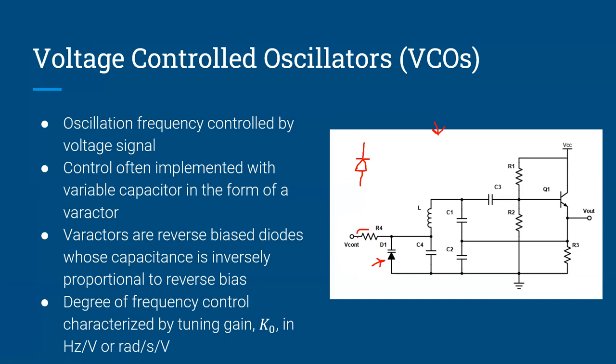There's a resistor that isolates the RF frequency on the diode from the DC bias being applied. Any DC applied will not affect the transistor bias because the DC path goes through the inductor, while the capacitors block DC. So applying a DC bias only affects the bias on the diode, not the transistor.